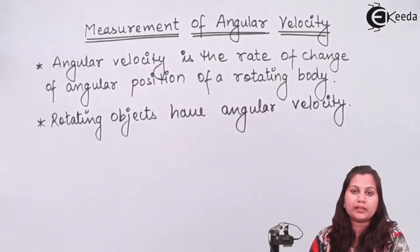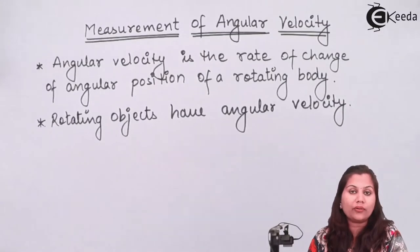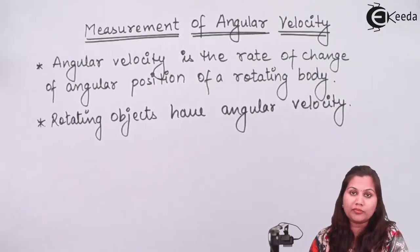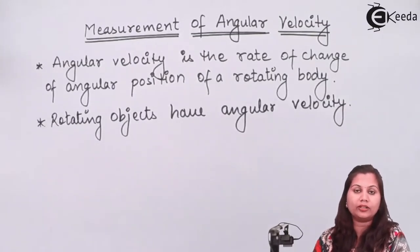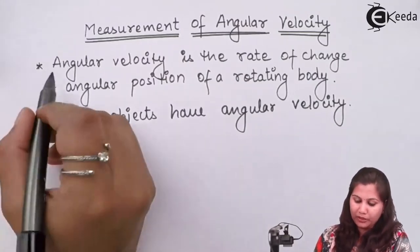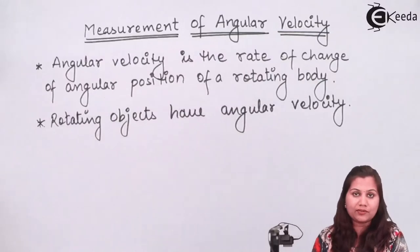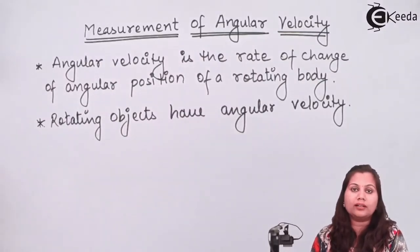In some instruments and devices, if any object is rotating and we want to find out the speed or velocity of that object, we will use the angular velocity transducers for that. For the measurement of angular velocity, the device which is used is called the tachometer.